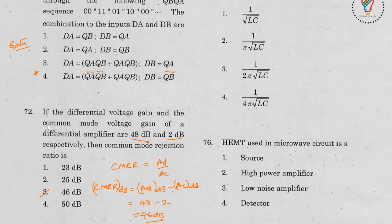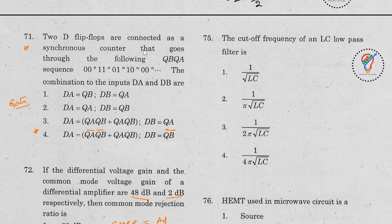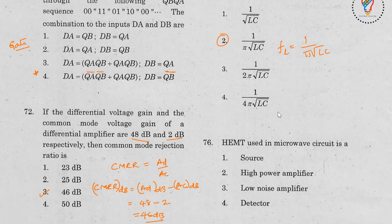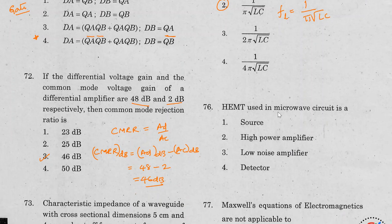Question 75: The cutoff frequency of an LC low-pass filter is fc = 1/(π√LC). Question 76: HEMT stands for High Electron Mobility Transistor. HEMT used in a microwave circuit is used as a high-power amplifier — answer is high-power amplifier.